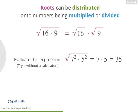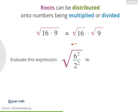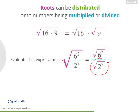Now distributing the root also works for division. Try evaluating this expression: the square root of 6 squared divided by 2 squared. You distributed the square root onto 6 squared and 2 squared, then cancelled squares and square roots, leaving you with 6 divided by 2, which equals 3.